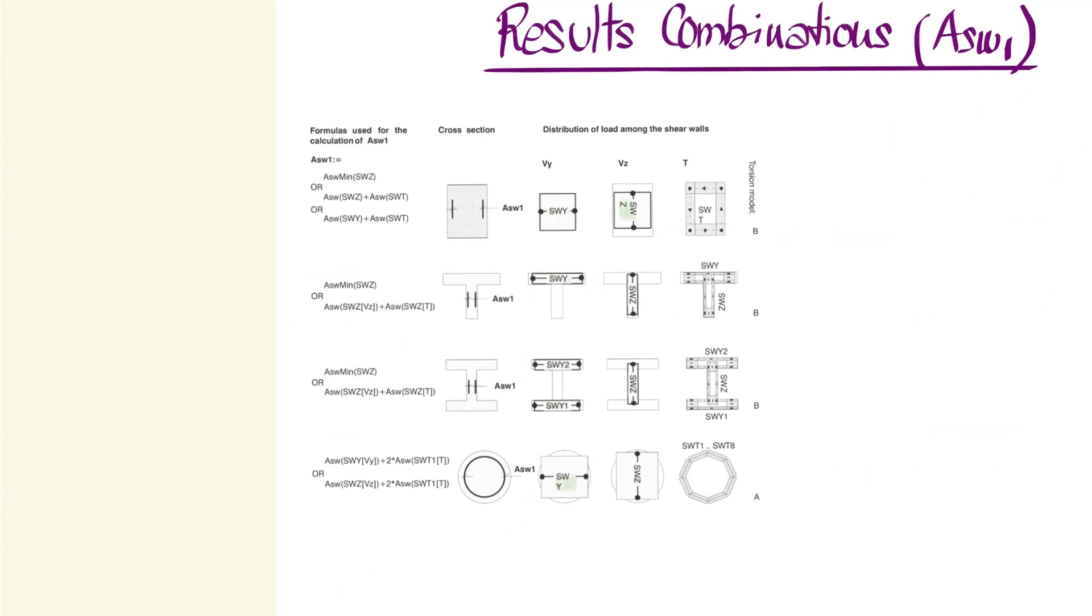In previous sections, we've observed a substantial group of cross section types with the shear torsion models for which we had to choose model automatic, model type A, or type B. Remember that we use model A for box sections, for example, and model B was the classic model we needed to use for double T type cross sections.